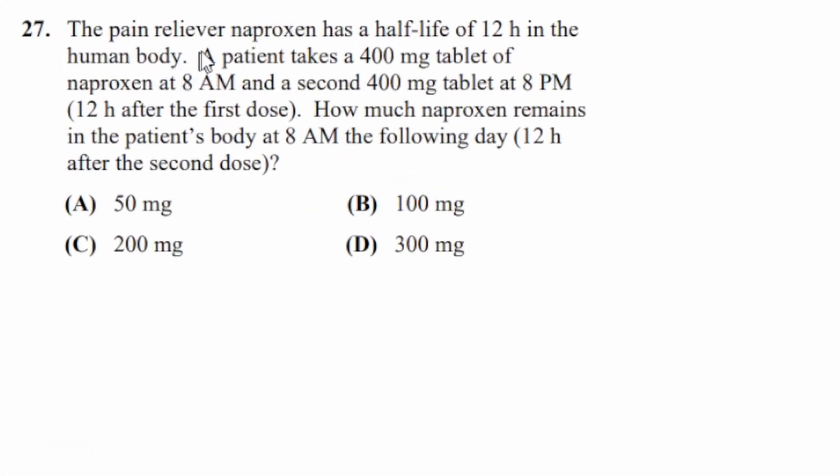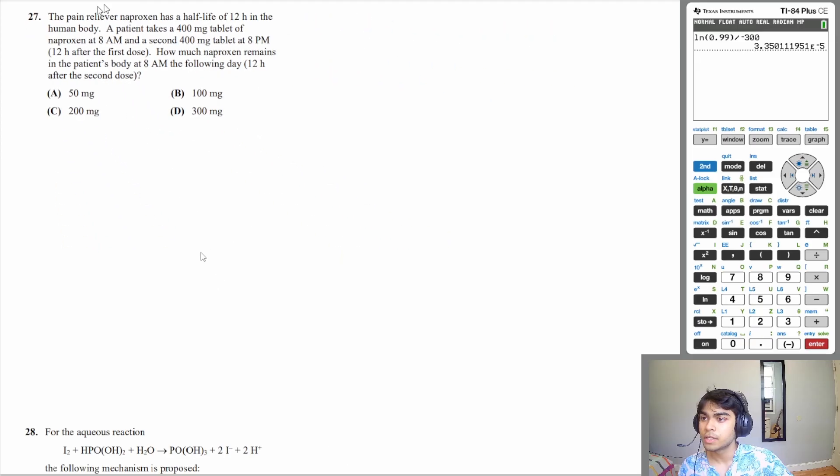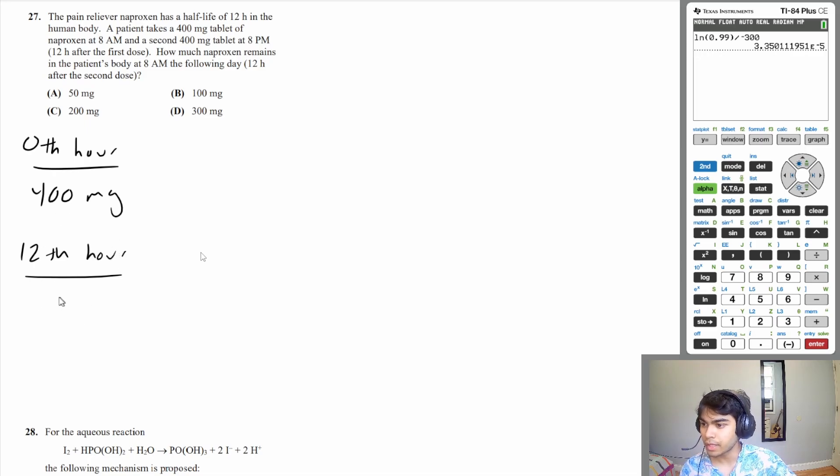Let's move on to question 27. The pain reliever naproxen has a half-life of 12 hours in the human body. A patient takes a 400mg tablet of naproxen at 8am and a second 400mg tablet at 8pm, 12 hours after the first dose. How much naproxen remains in the patient's body at 8am the following day, 12 hours after the second dose. So let's just write out what's happening. So initial time, let's say 0th hour, you have 400mg. And at the 12th hour, you add another 400mg to the system. So how much is in the system total at the 12th hour?